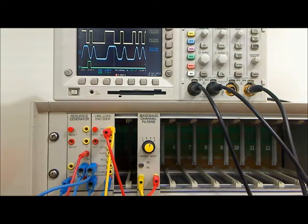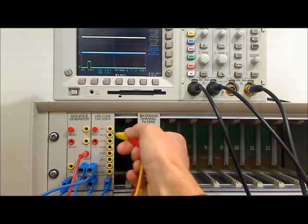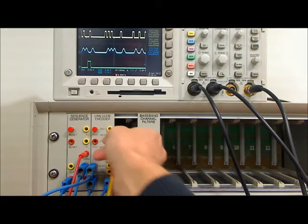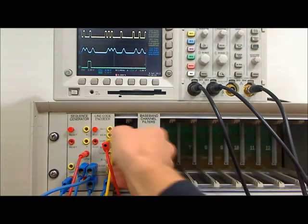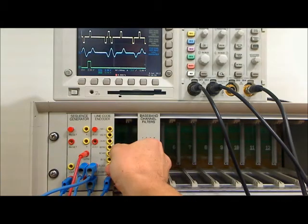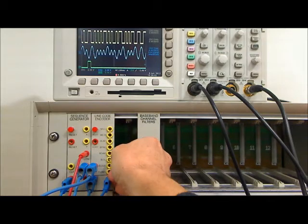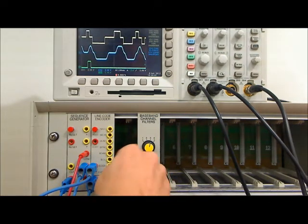The line codes we have to choose from are NRZL, NRZM differential, unipolar RZ, then bipolar RZ, RZAMI, biphase, dicode, and partial response duobinary.